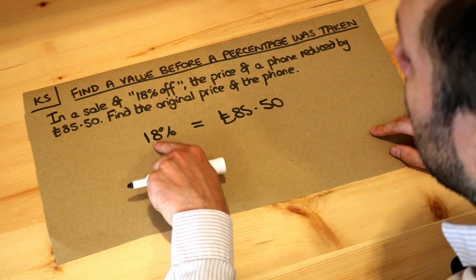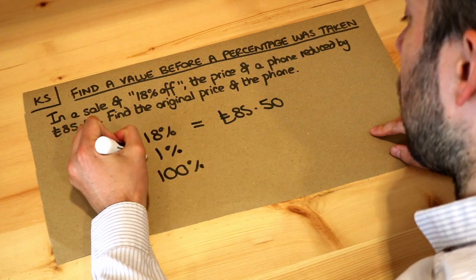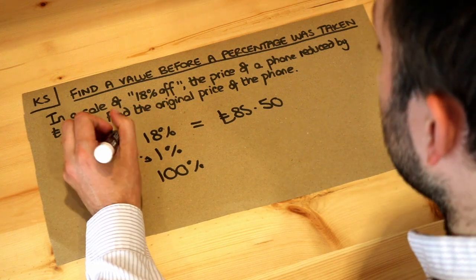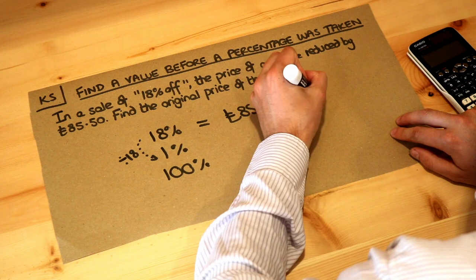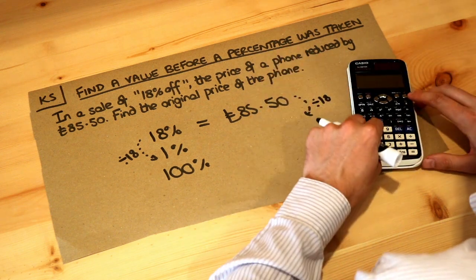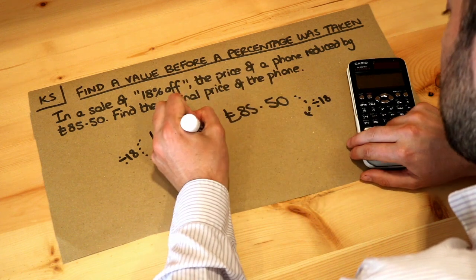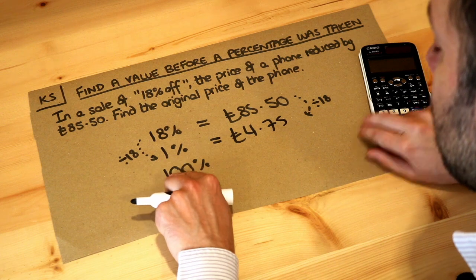Well, we can go via 1% if we wanted. If we knew what 18% was, we could divide it by 18 to get to 1%. So if we divide this value, £85.50, similarly by 18, we get £4.75.